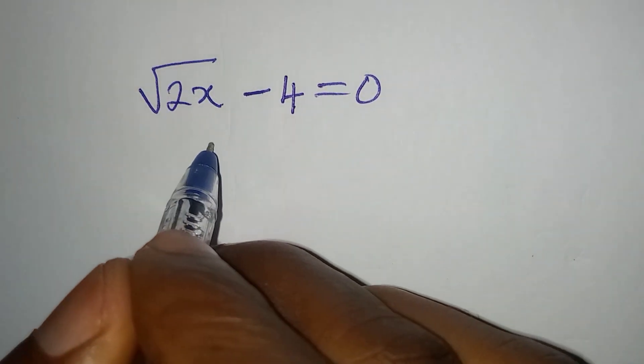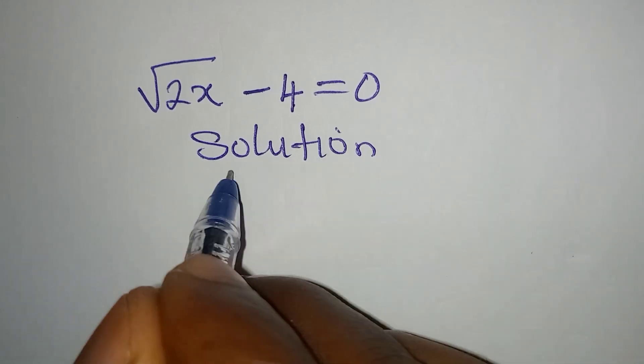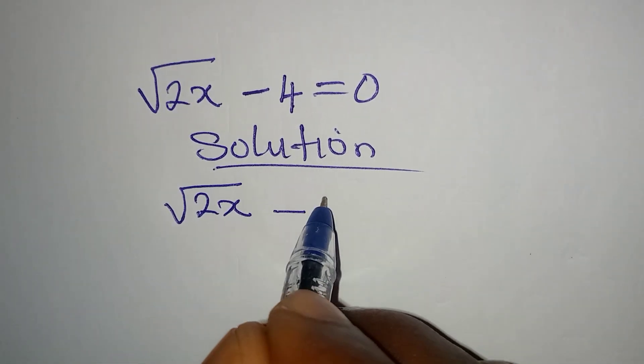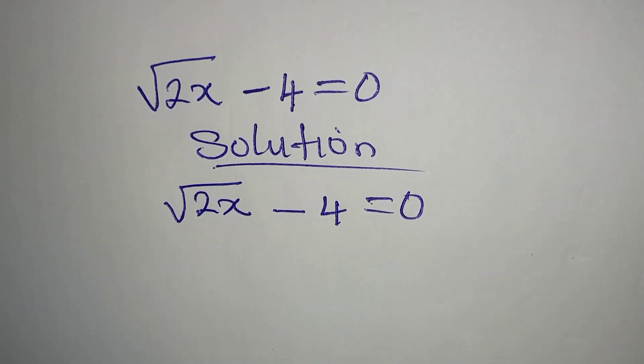Hello everyone, let's provide a solution to this problem: square root of 2x minus 4 equal to 0.